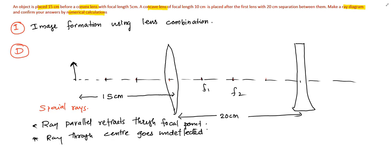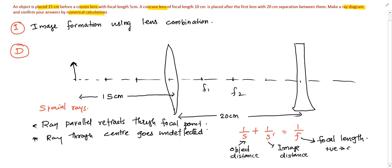To do the numerical calculation, we need the equation connecting the object distance, image distance and the focal length, the thin lens equation: 1/s + 1/s' = 1/f, where s is the object distance, s' is the image distance and f is the focal length. f is positive for convex lens and negative for concave lens.